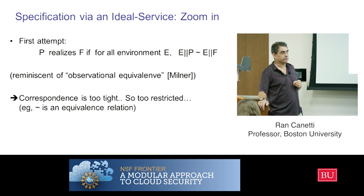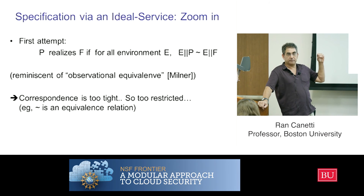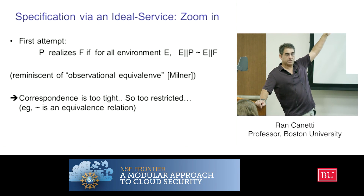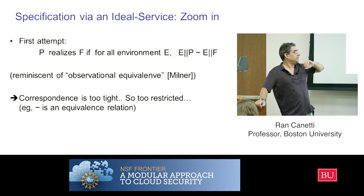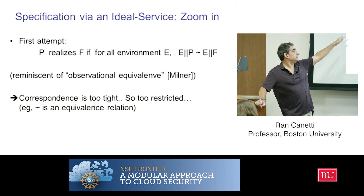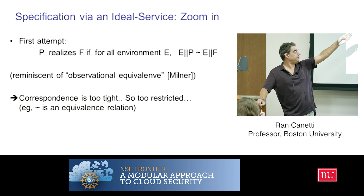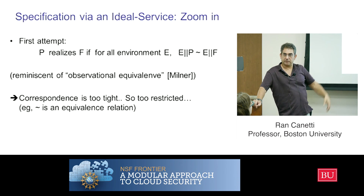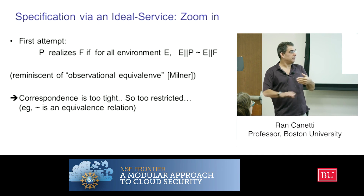But this is not good enough for us, because the correspondence is too tight. The environment actually sees everything — every output, every effect of process P or the ideal system F — and we don't want to allow that. It's also an equivalence relation: if P realizes F, then also F realizes P, and they're too tightly coupled. We want to be able to allow some slack.